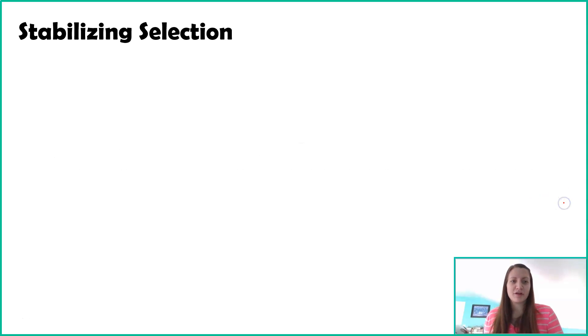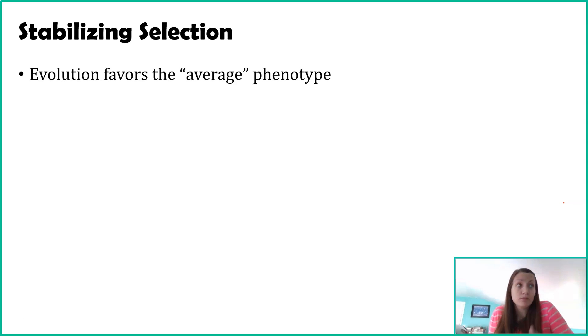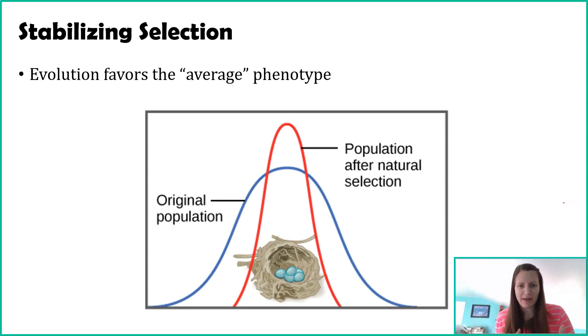The first type of selective pressure we'll talk about is stabilizing selection. There's three different selective pressures we'll discuss. With stabilizing selection, evolution and natural selection, or sexual or artificial selection, is favoring the average phenotype.